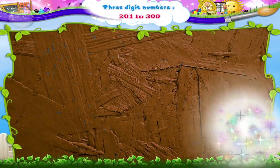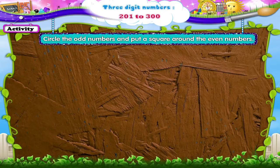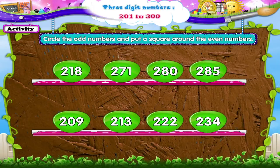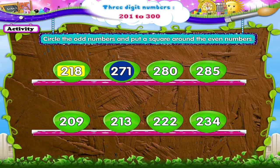Look at this last activity, Starry. Here are numbers between 200 and 300. We have to circle the odd numbers and put a square around the even numbers. Number 218 is an even number as it has 8 in its units place. What about 271? Yes, 271 is an odd number because the digit in the units place is 1. Let us circle the other odd numbers: 285, 209, and 213.